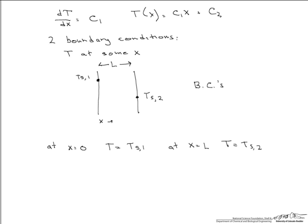So let's go back to our temperature distribution. T(x) equals C1 times x plus C2. And the easiest boundary condition is to use the first one, which is at x equals 0, T equals Ts1. Because you can see we can automatically, since this is 0, solve for C2.